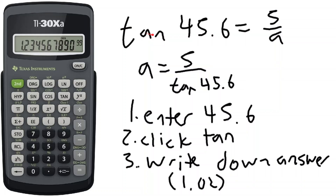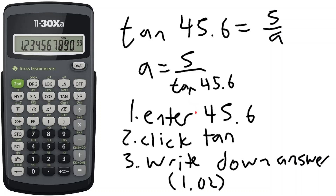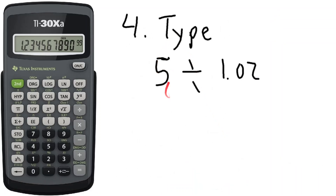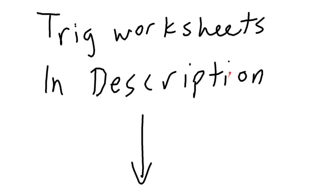Next, for the equation a equals 5 over tan(45.6): after simplifying, enter 45.6 and click tan to get tan(45.6). This is where physical calculators can be tricky — you have to write down the answer, which is about 1.02, then type in 5 divided by 1.02 to get your result for a.